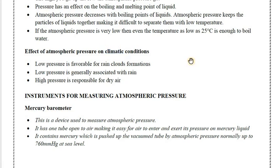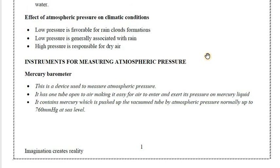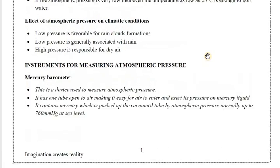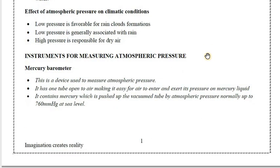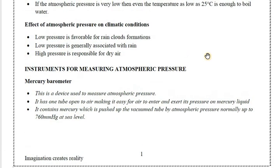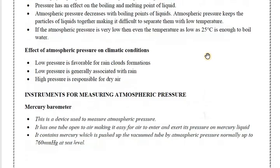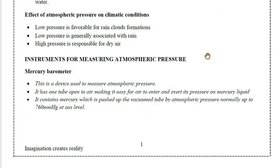There are also effects of atmospheric pressure on climatic conditions: low pressure is favorable for rain and cloud formation, while high pressure is responsible for dry air. In places with high altitude there is low pressure, which is why there are rain clouds. For example, in Harare and Bulawayo, when we get towards the rain season you see those cumulonimbus clouds — very big clouds — because the low pressure there supports their formation.